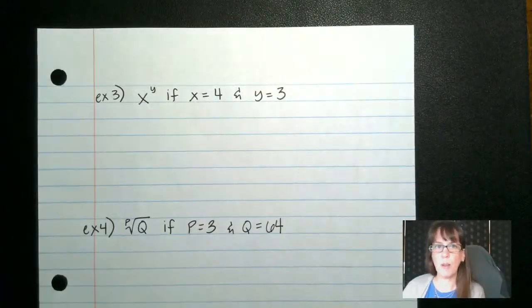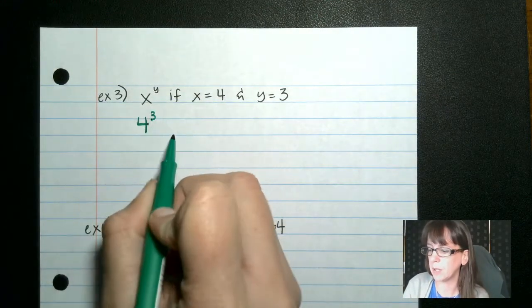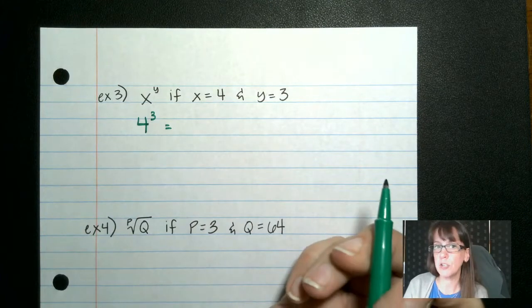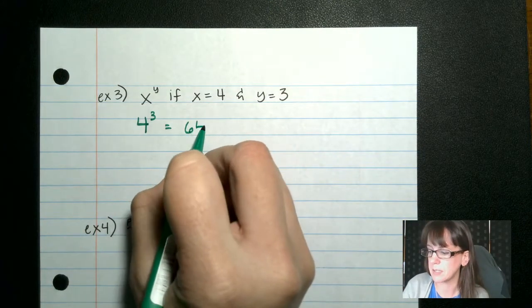If we have x to the y power, if x is 4 and y is 3, so 4 to the 3rd power. If we do that, you can either look at your cheat sheet, or you can know 4 times 4 is 16 times 4, we end up with 64.